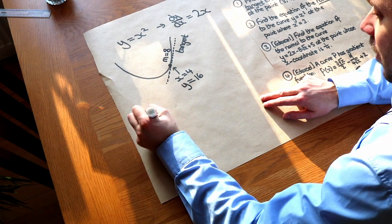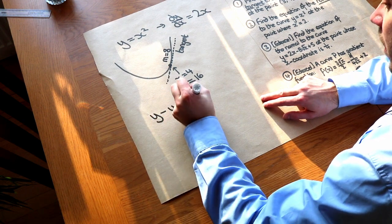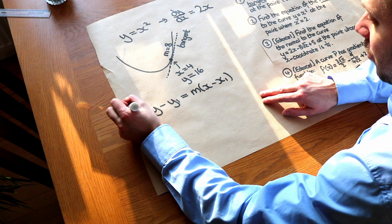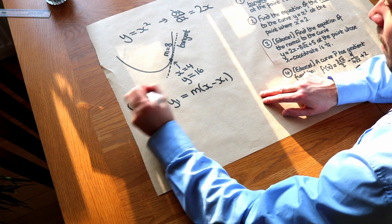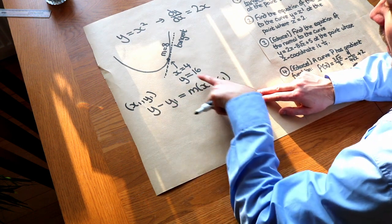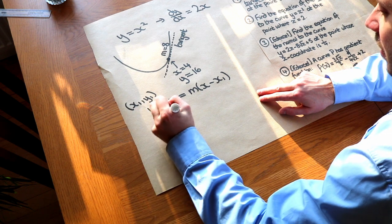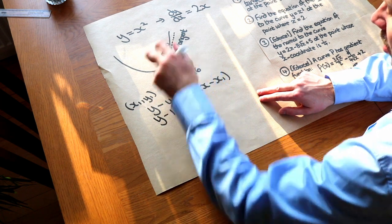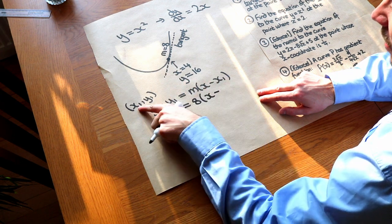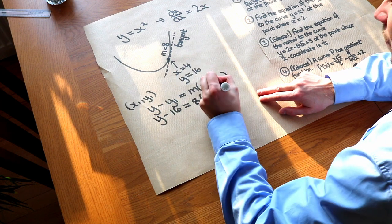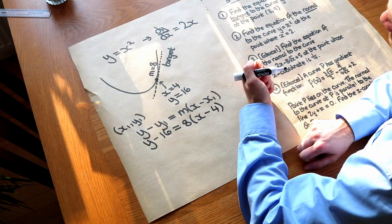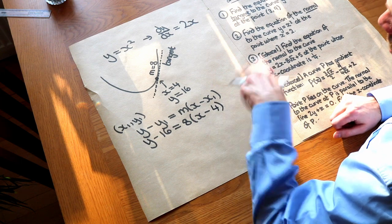Remember this formula for the equation of a straight line: y minus y1 equals m times (x minus x1). That's the equation of a straight line through point (x1, y1) with gradient m. Substituting in: y1 is 16, gradient m is 8, and x1 is 4, giving y minus 16 equals 8(x minus 4). If an exam question doesn't specify what form to give, you can leave it as it is.